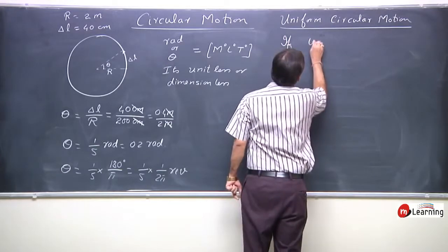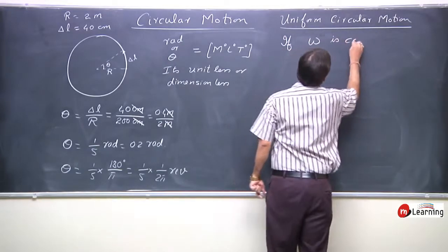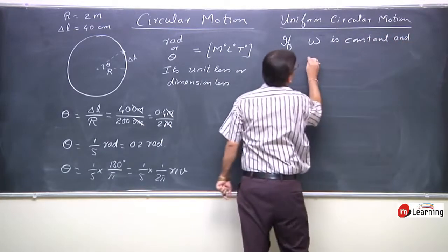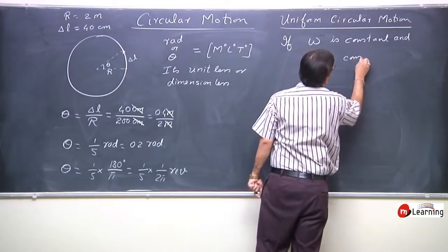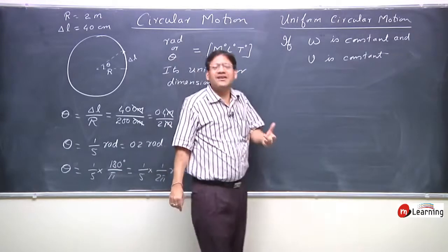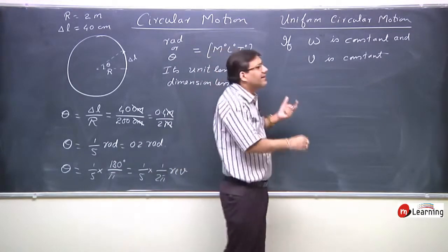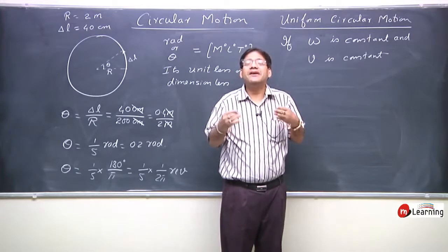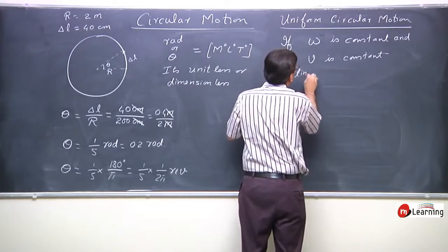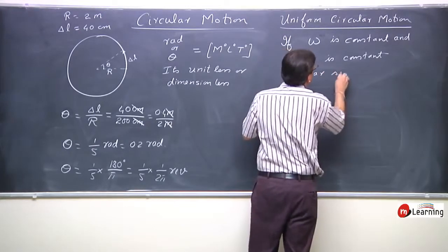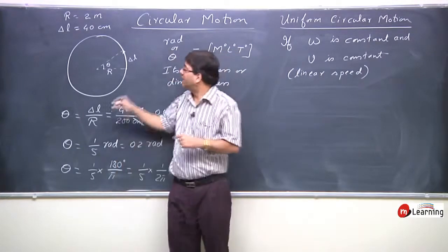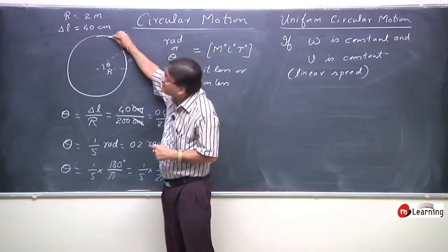If omega is constant and velocity is constant — it is linear speed, the speed of the particle along the curved path. This V is, in fact, a linear speed, because velocity is a vector quantity and the direction of velocity constantly changes.